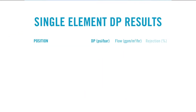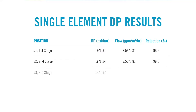As increased delta pressure was observed in the first stage of the RO system, the site sent the first three elements from the first stage for individual performance testing at the Avista facility. This gave us a performance snapshot to determine which elements were most affected by the fouling problem.